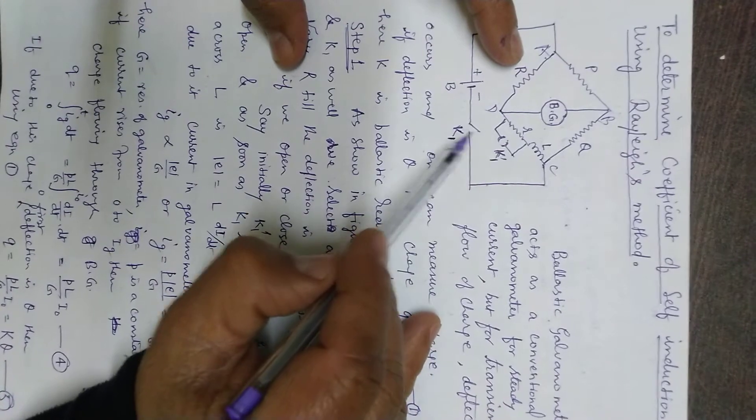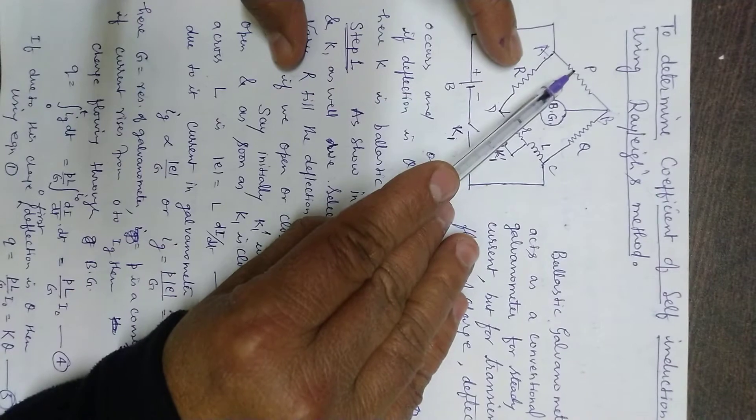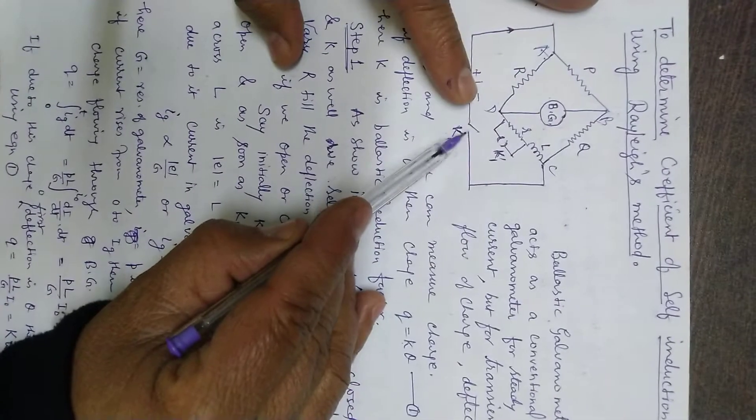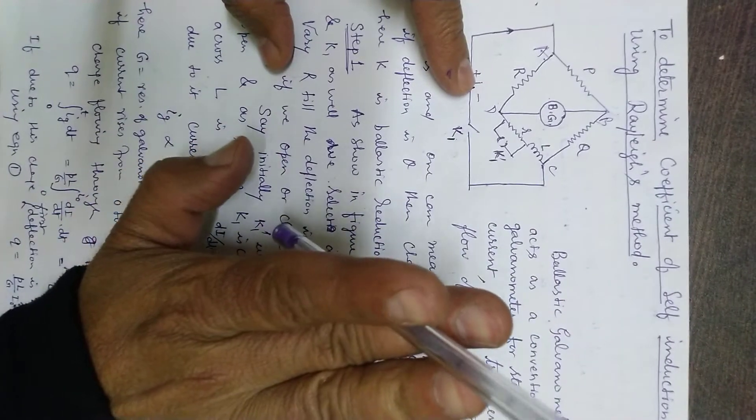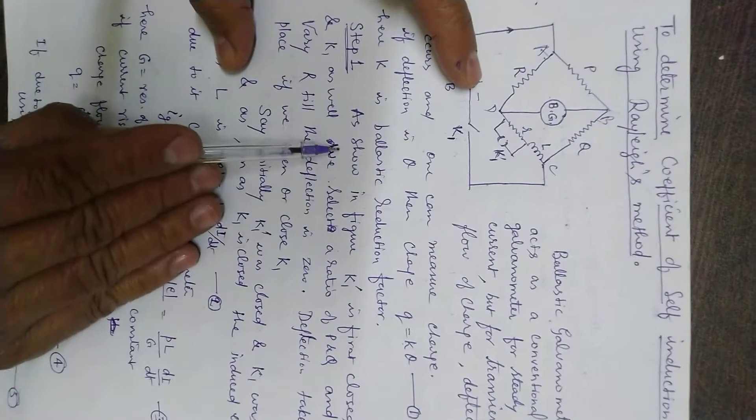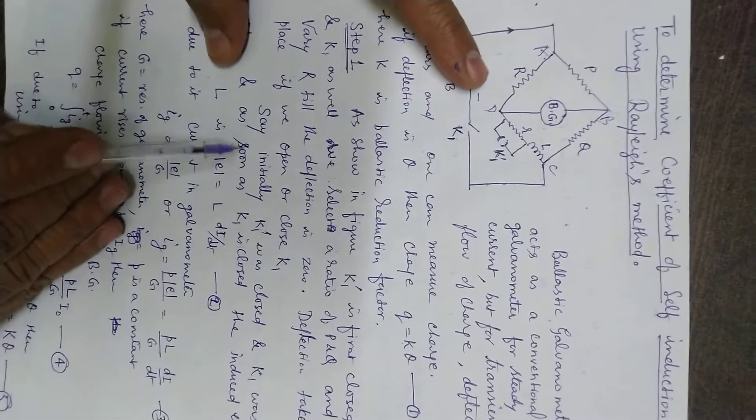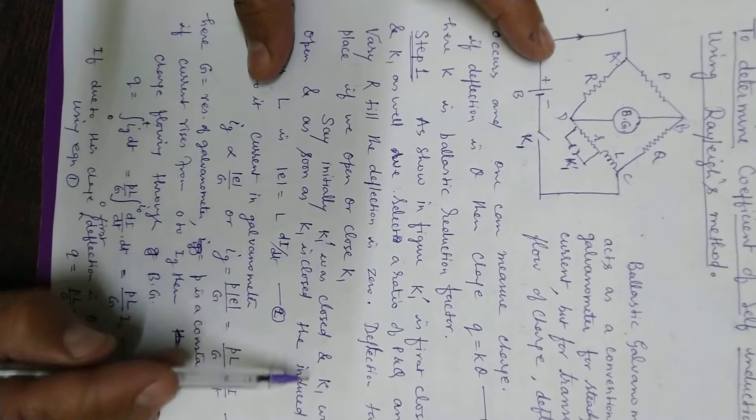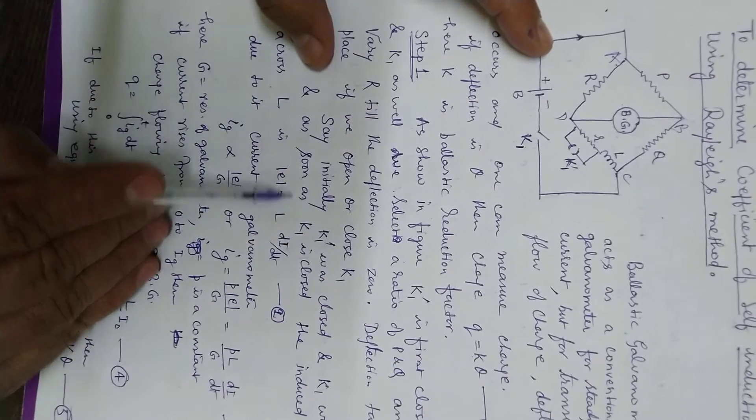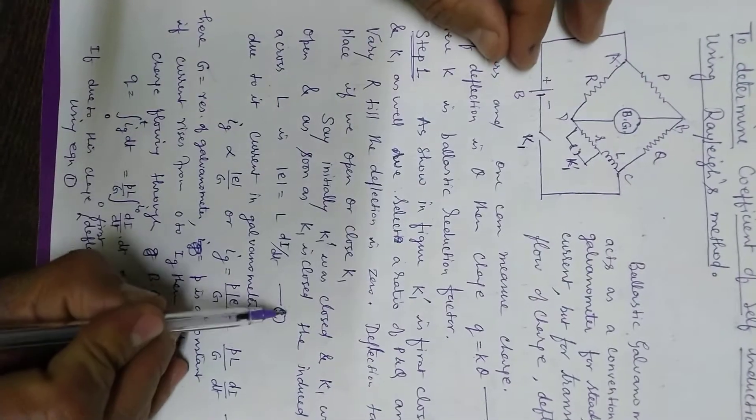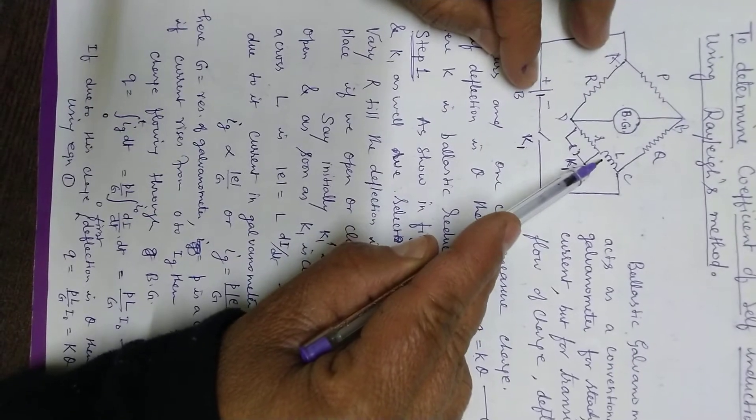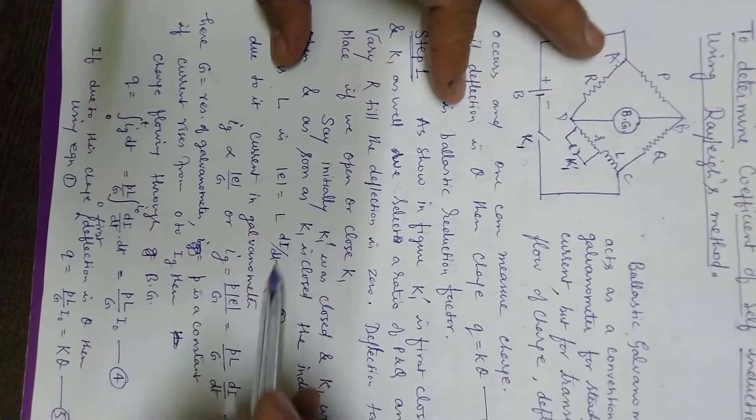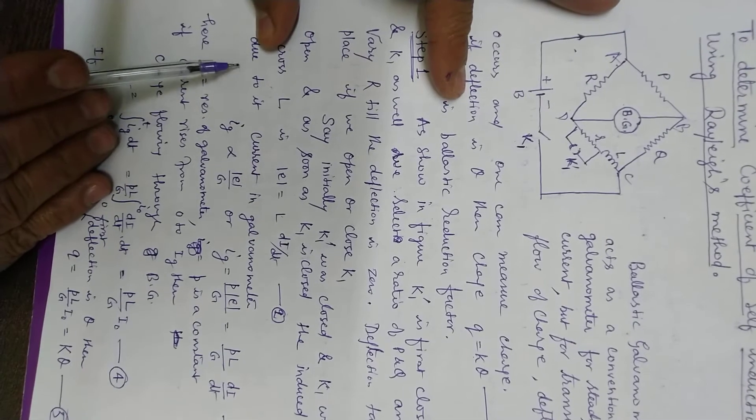As soon as you close K1, there will be a current flowing and that will induce an emf across L. In step first, as shown in the figure, K1 dash is first closed. Initially K1 dash was closed and K1 was open. As soon as K1 is closed, the induced emf across L will have magnitude L di by dt. I'm not interested in the sign, so magnitude e equals L di by dt.